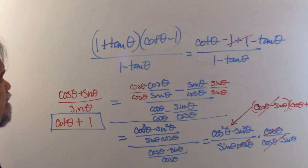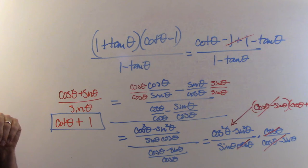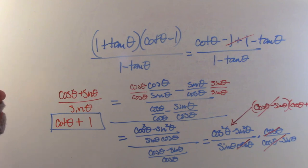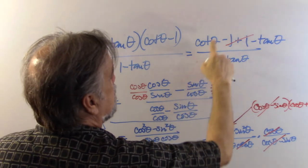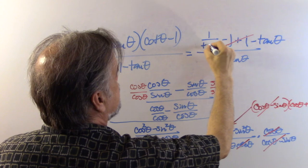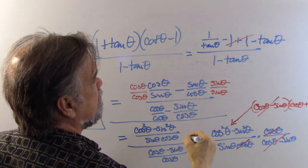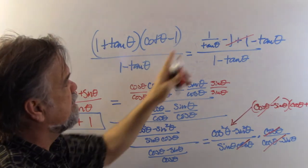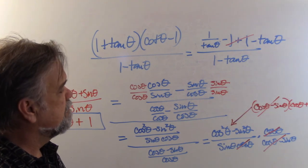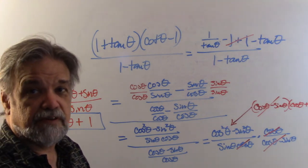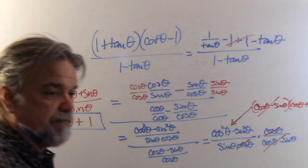There's probably a faster approach for number eight. At the very beginning, I could have written cotangent as one over tangent and then multiplied numerator and denominator by tangent to simplify. But the important thing is to get to the answer, not necessarily to get there fast.